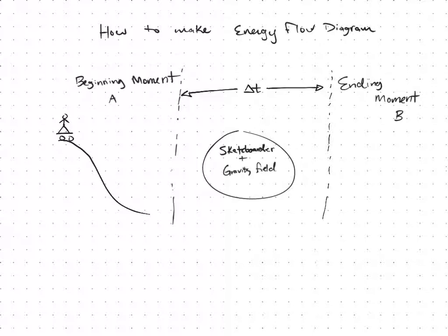When the skater is at the top, what's the speed? Zero. So I'm going to make a note that the speed is zero because speed is important for K. I'm going to make a note that the height is h because the height in the gravity field is important for U for potential. And I'm going to make a bar graph with K and Ug adding them up.